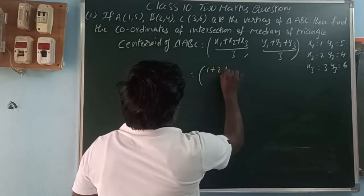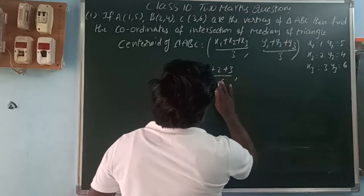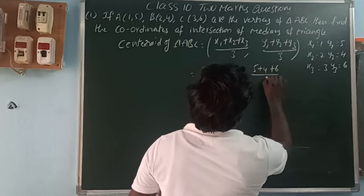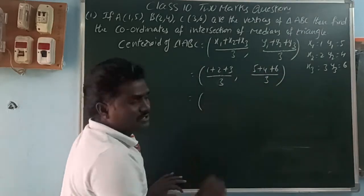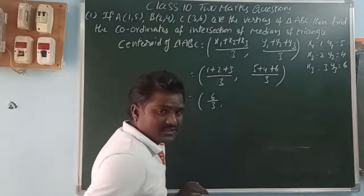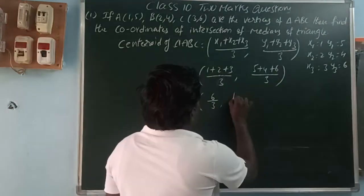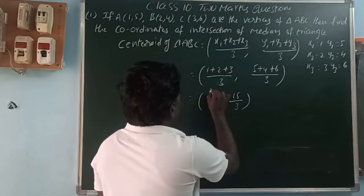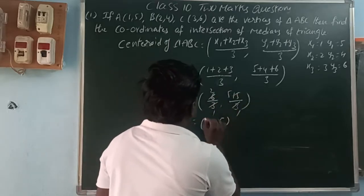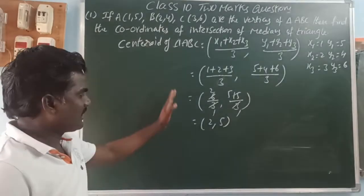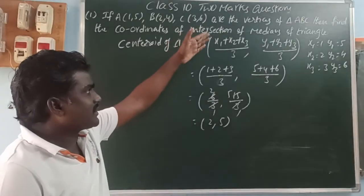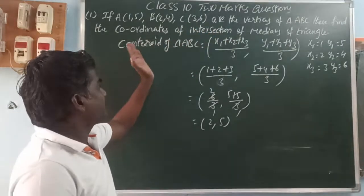So that gives us (1+2+3)/3 and (5+4+6)/3. That is 6/3 and 15/3, which equals 2 and 5. So the centroid of triangle ABC is (2, 5). The point of intersection of the medians is nothing but the centroid.